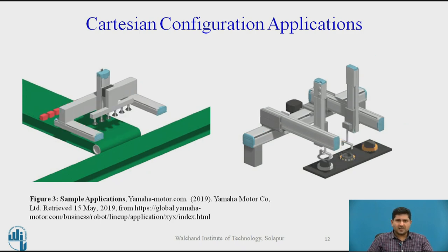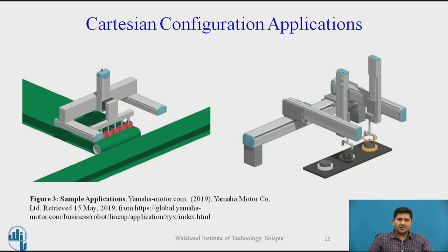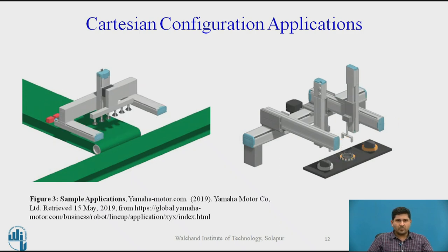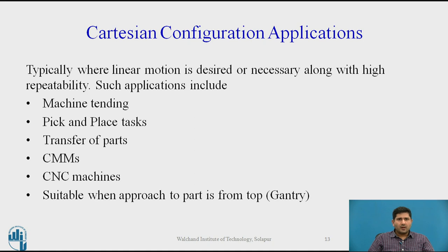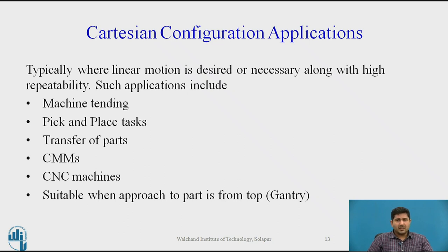You'll notice that it has actually two arms in tandem, which is again very popular. To generalize, applications typically involve machine tending, pick-and-place tasks, transfer of parts, use as CMMs, and alongside CNC machines. One of the best cases to use Cartesian configuration is when you have to approach a part from the top — that is the gantry configuration — where it is very, very popular.